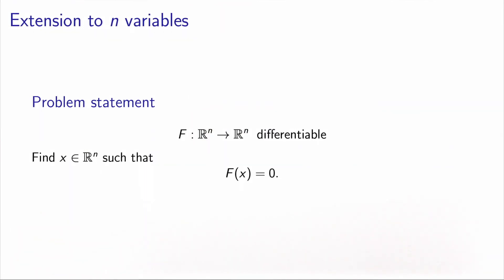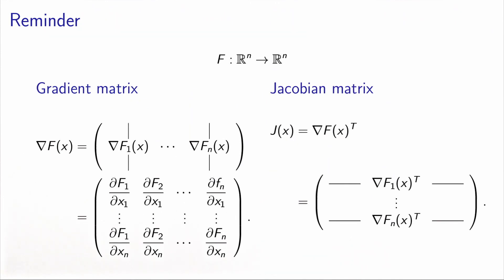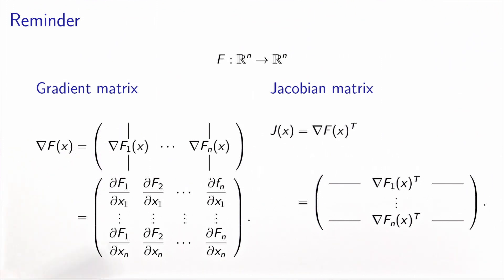The statement of the problem involves a function which takes n variables and returns n values — these are the n equations — and we would like to find x such that f of x equals zero. The gradient matrix is a matrix in which each column is the gradient of the corresponding equation: gradient of equation one, equation two, up to equation n. In the context of Newton's method, it is convenient to use the transpose of this matrix, called the Jacobian, where each row corresponds to the derivatives of a different equation.